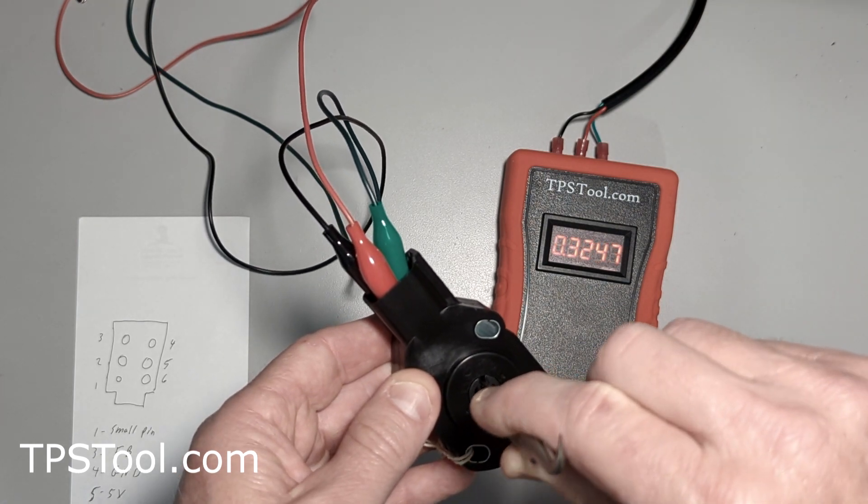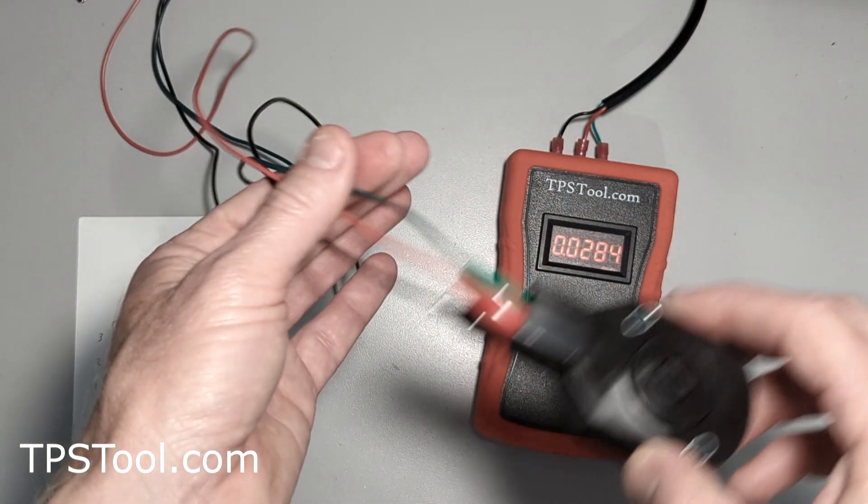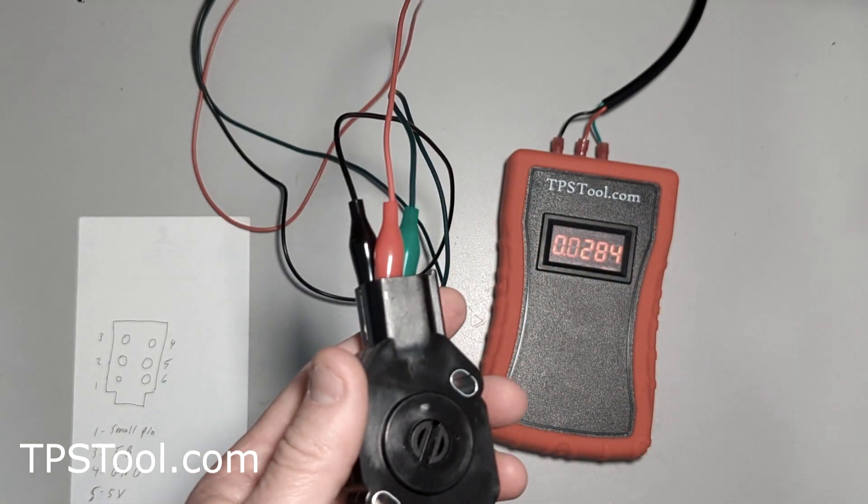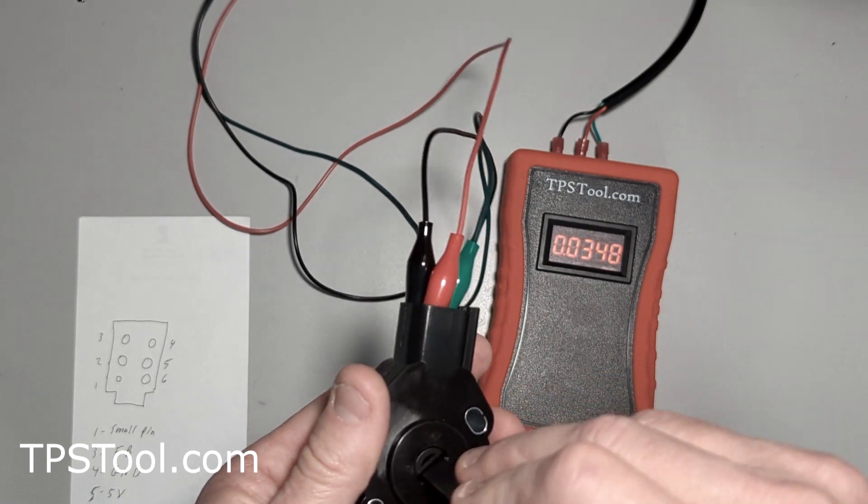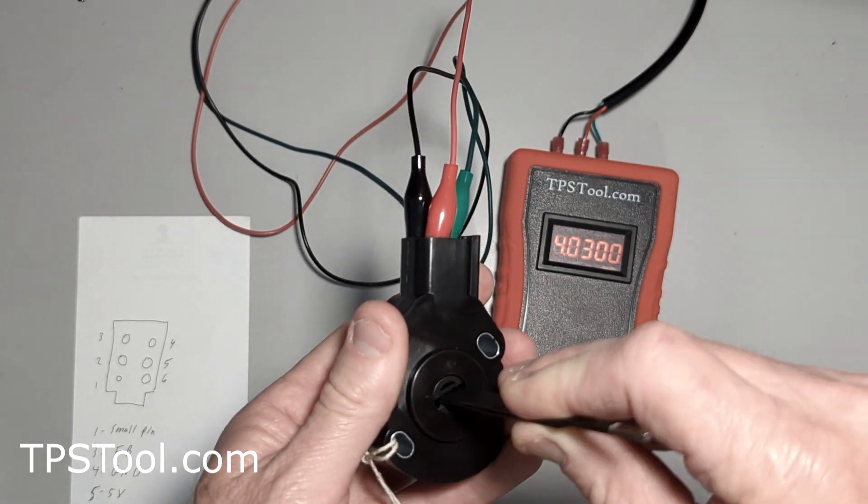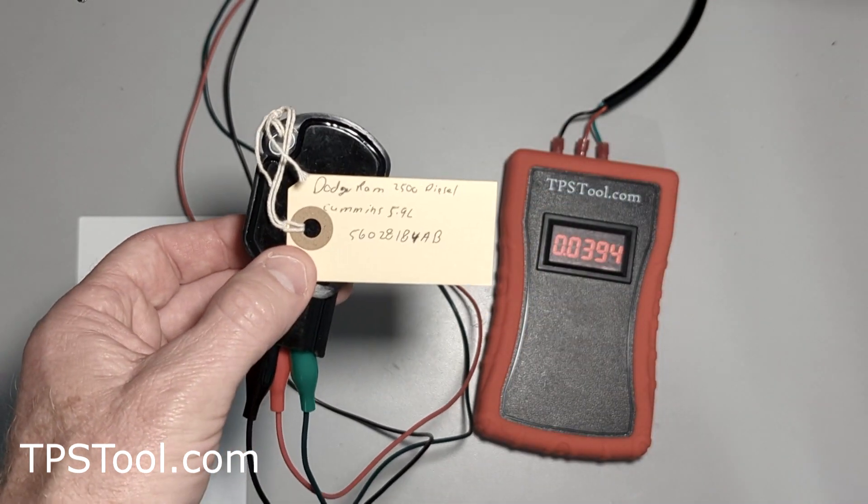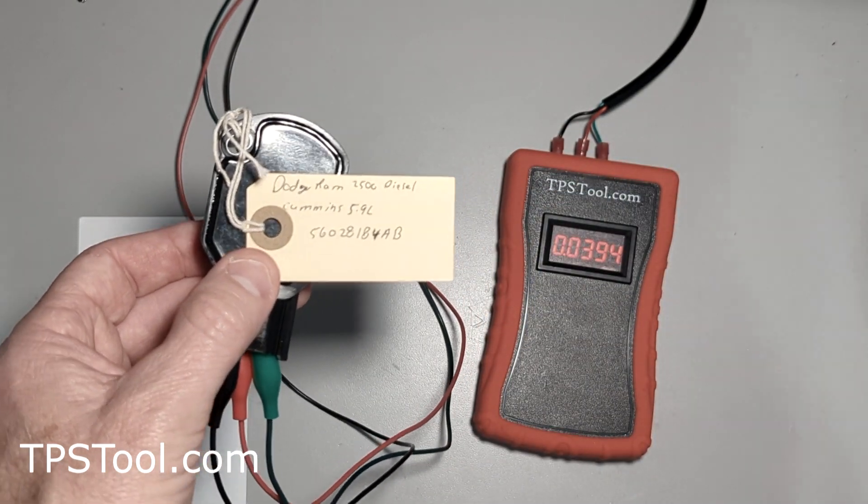If you had this mounted on the engine, these are on there fairly sturdy. You can mount it to the engine and set it however you need. That's how you attach it to a Cummins diesel TPS. I hope this helps somebody. Comments and questions are welcome. Please like and subscribe. Thanks.